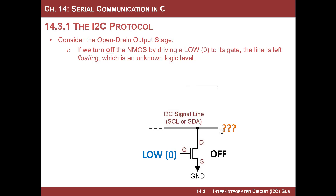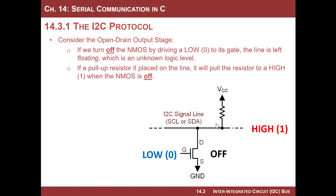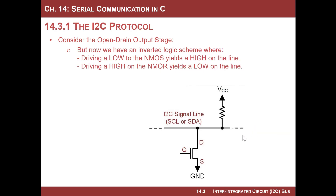To get around this, in I²C you must put a pull-up resistor on every line — both clock and data. Now when you drive a low, the transistor is off and the pull-up resistor brings the line high. We finally have a situation where we can drive logic levels on the gate and see corresponding logic levels on the bus line.